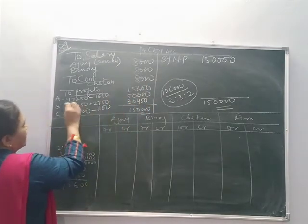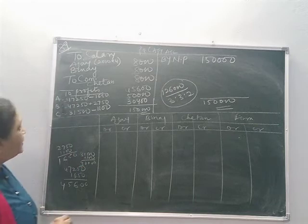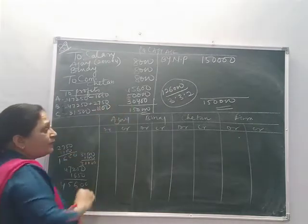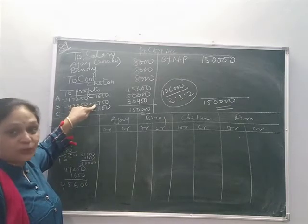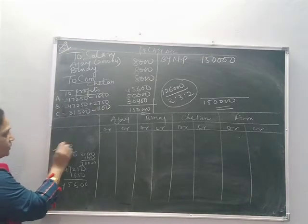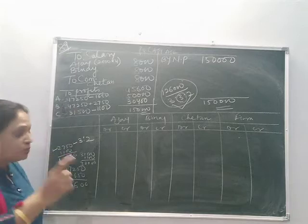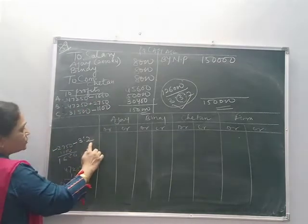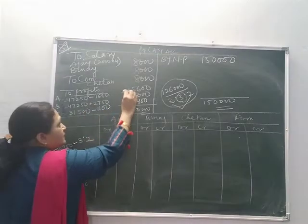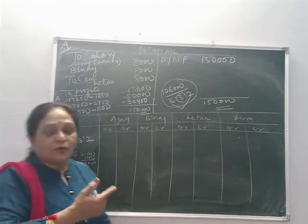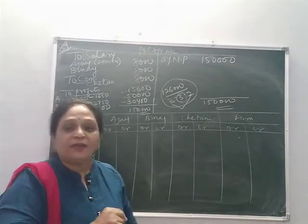But the guarantee of Binay is 50,000. Binay is only getting 47,250, so there is a deficiency of 2,750. This deficiency of 2,750 is to be divided between Ajay and Chetan in the ratio 3:2, since Binay is the guaranteed partner. So 1,650 is deducted from Ajay and 1,100 from Chetan, and given to Binay — making his share 50,000. That is why we prepare the P&L appropriation account and then transfer the actual amounts.